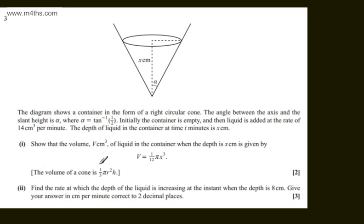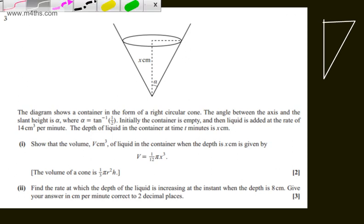We're told the volume of the cone is one third pi r squared height. If we just consider now here, alpha is equal to the inverse tan of one half. So if I just draw a quick sketch, what we have here is a right angle triangle. So if we have the angle alpha, what we can say now is the following.